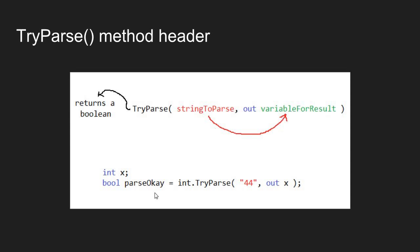TryParse returns true if the parse succeeds, and false if the parse fails. In our usage example, I'm going to declare a variable to hold an integer value and a Boolean variable to hold whether the parse succeeded or not. You can call TryParse from any data type - for example, int.TryParse to parse into an int, or double.TryParse to parse into a double, and so on.